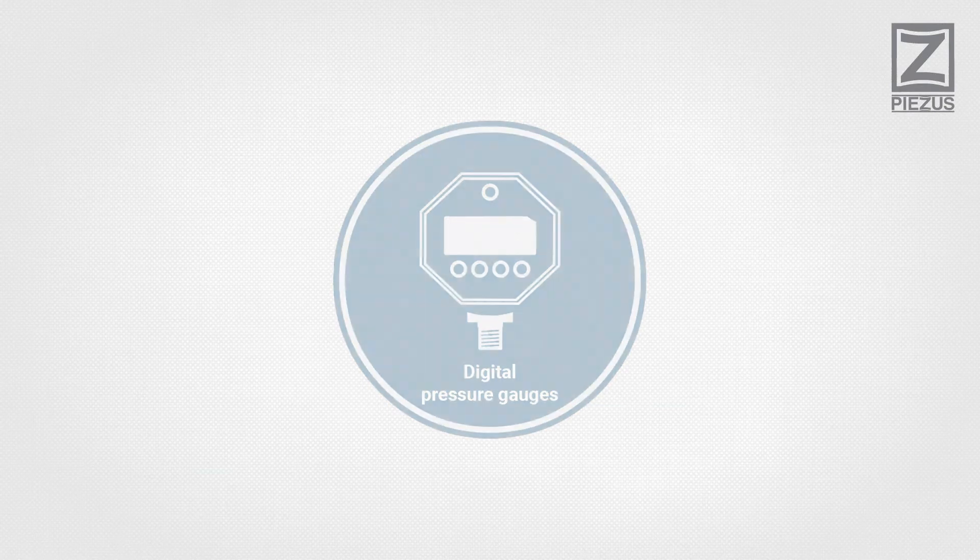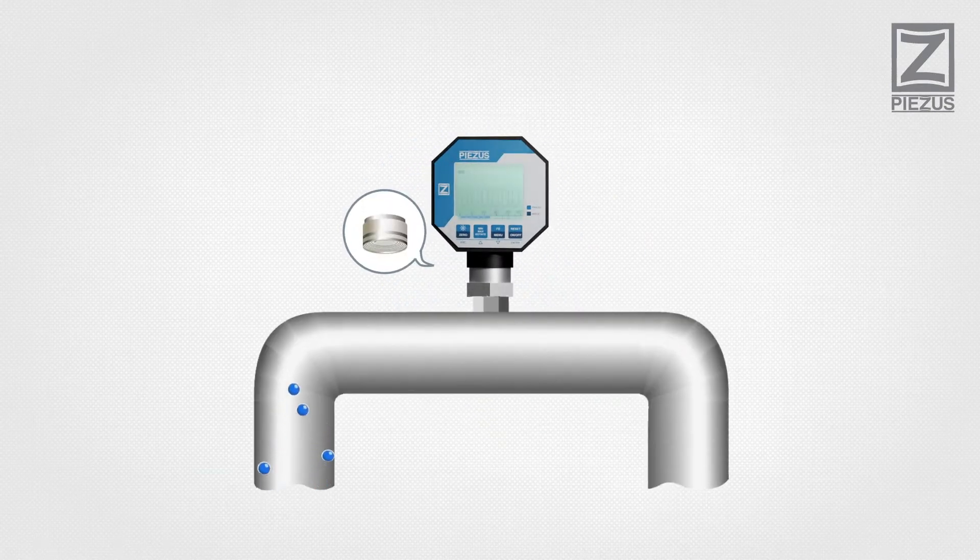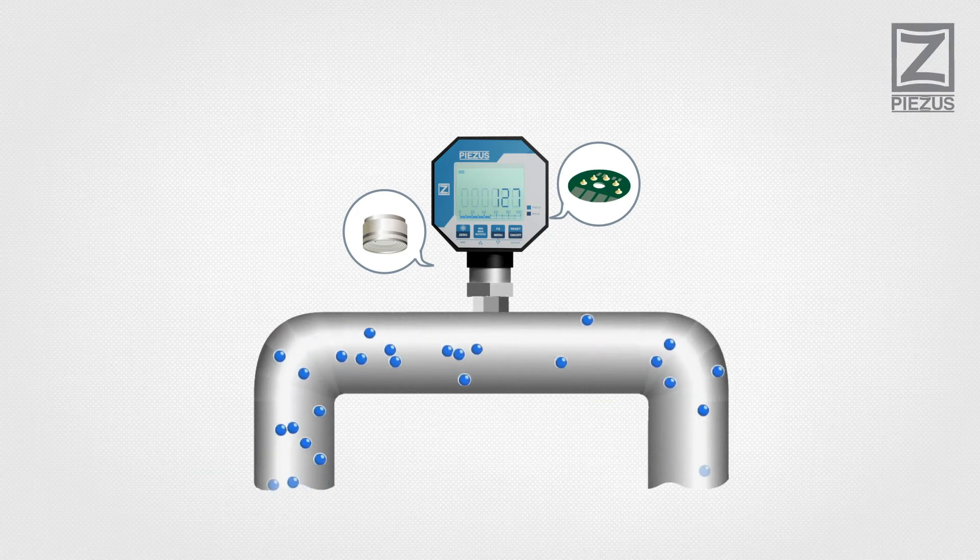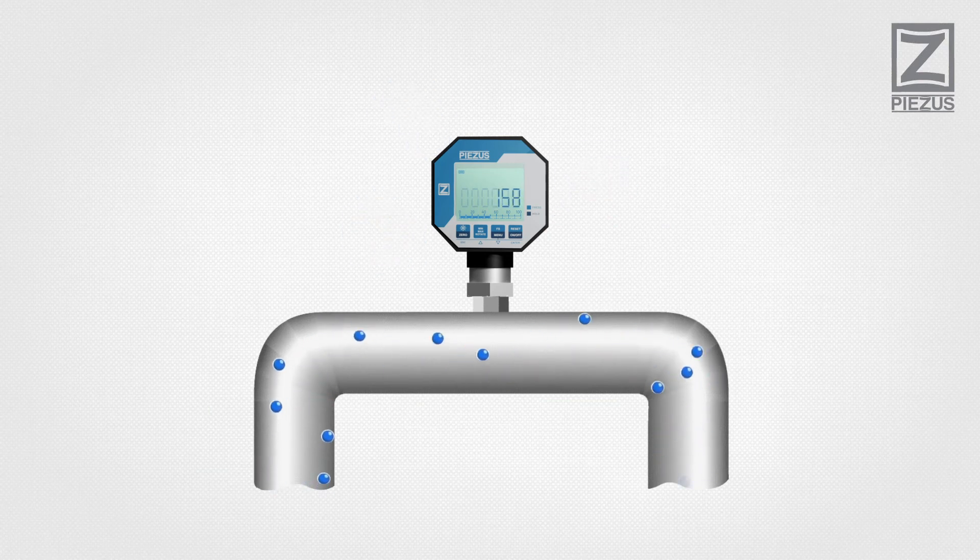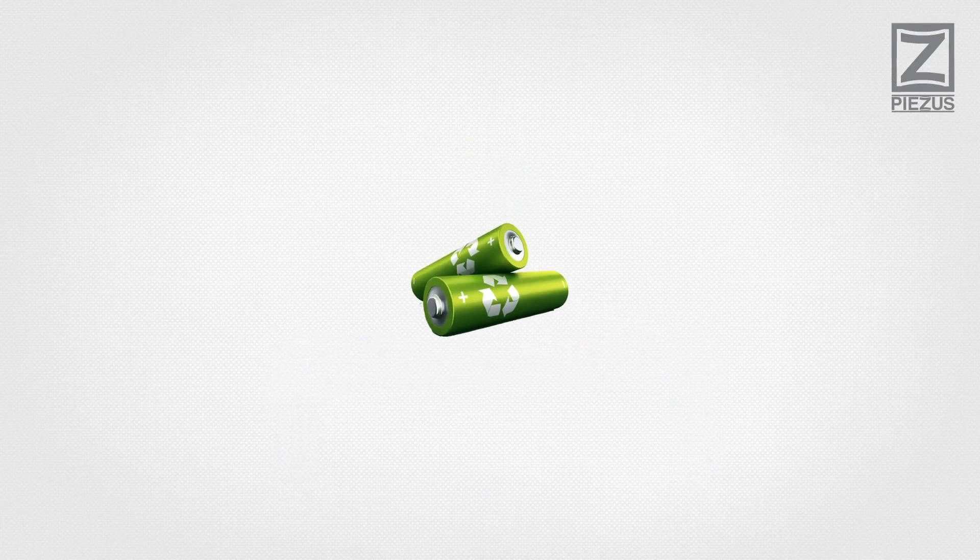Digital pressure gauges operating principle: A digital pressure gauge is based on a pressure sensor element that converts applied pressure into an electrical signal. An electronic board transforms the received signal and displays measurement data on a digital screen. The digital pressure gauge is powered by batteries.